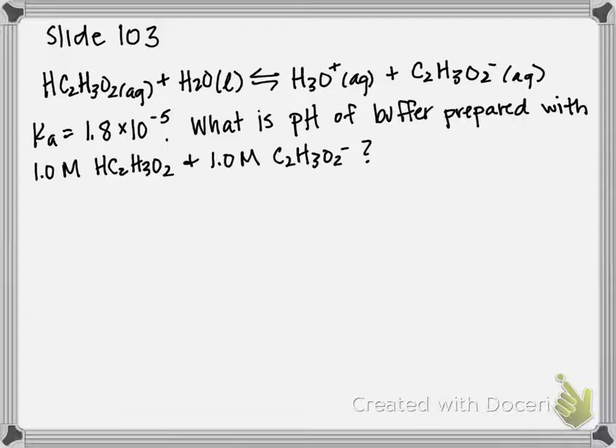So the strategy for this is going to be to write an acid dissociation constant equilibrium expression for this reaction, and use our given Ka value, as well as the concentrations of acetate and acetic acid, to solve for hydronium ion concentration, which we can then plug into the pH equation and solve for pH.